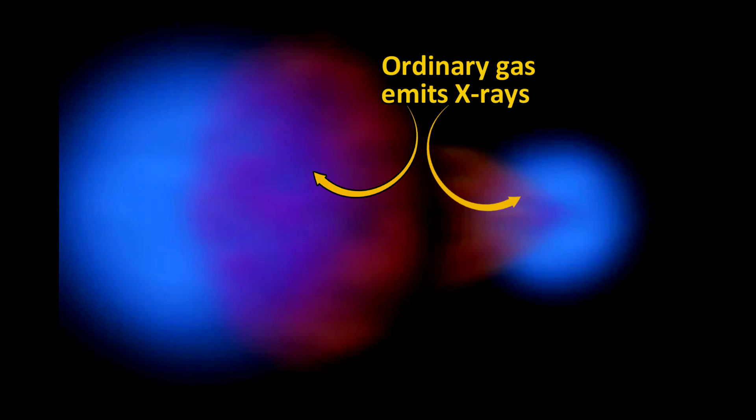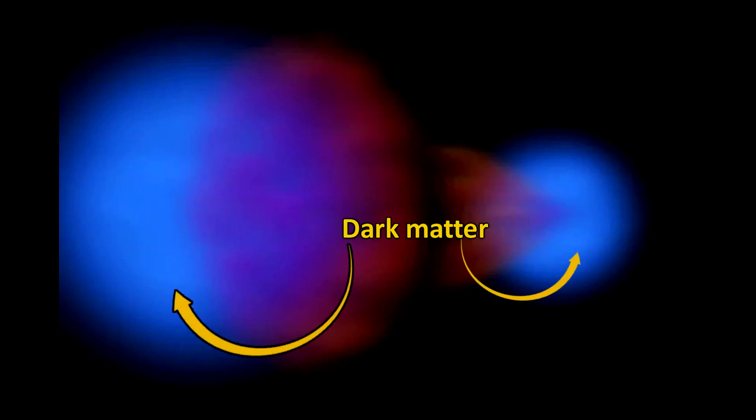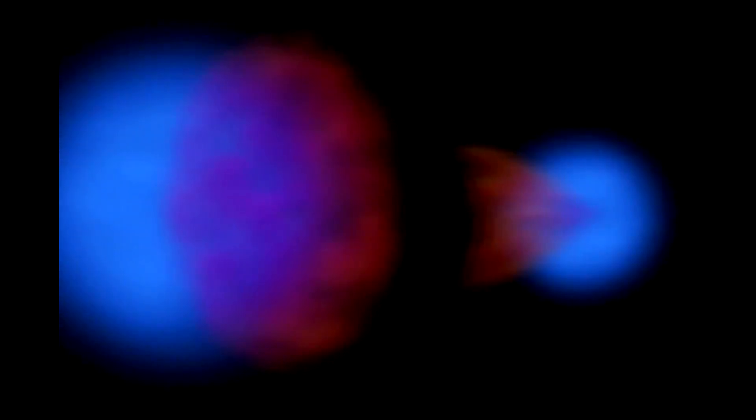This is the ordinary matter of the two clusters. The majority of the matter, however, as indicated by the gravitational lensing, is in the blue areas of the photo. This is the dark matter that simply did not interact with the ordinary matter, or with itself, as the two clusters collided, and thus passed right through. So you can clearly see that most of the mass is not where most of the ordinary matter is.